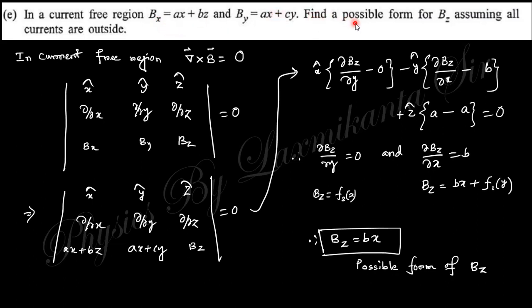Next question: in a current-free region, Bx = ax + bz and By = ax + cy. Find a possible form of Bz. In a current-free region, curl of B = 0 according to Maxwell's law. If you consider Bx, By, Bz with the given values, you get ∂Bz/∂y = 0 and ∂Bz/∂x = b. Combining these two relations, we get the possible form Bz = kx.